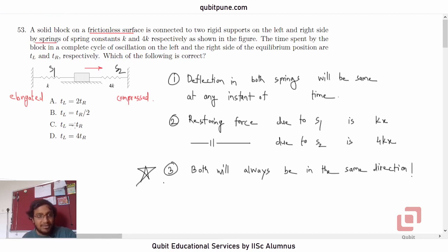For example, let us say this time the block has crossed the main position and it is moving towards left. It is moving towards left. Now, if it is moving towards the left, what is happening to S1? S1 is getting compressed.